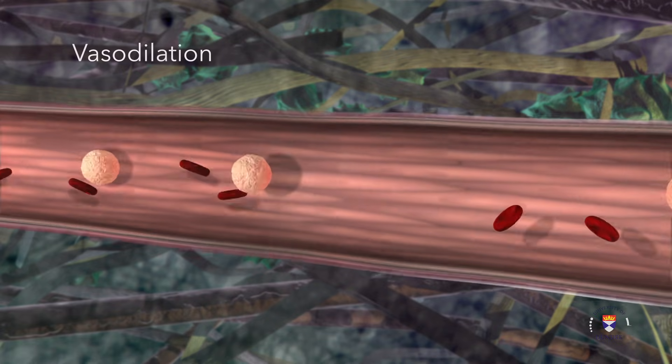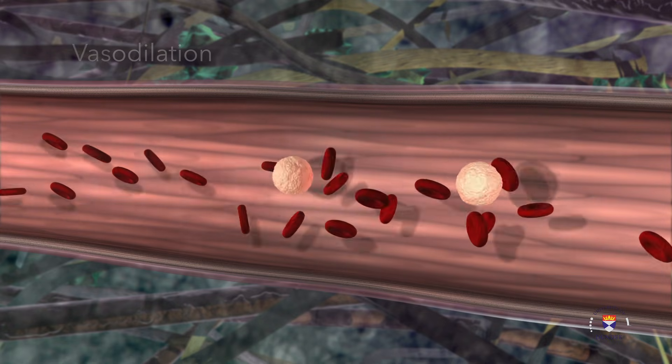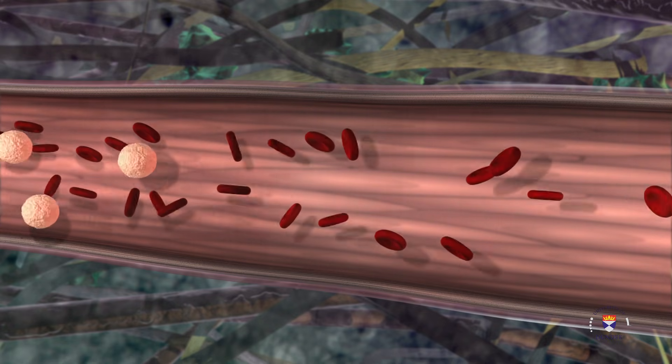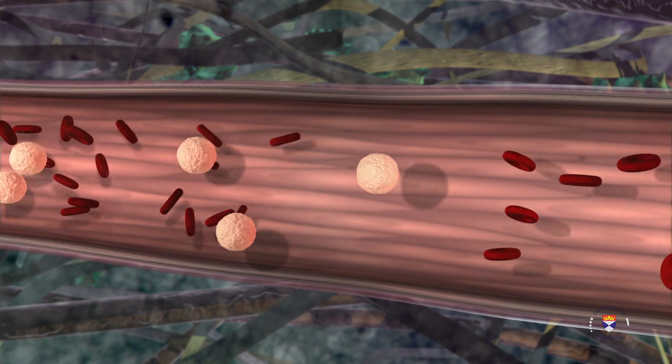Vasodilation, mediated by histamine and nitric oxide, starts in the arterioles and moves into the capillary beds close to the site of injury. This is responsible for the heat and redness seen in inflammation.